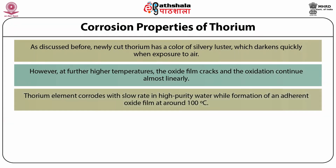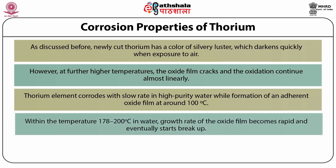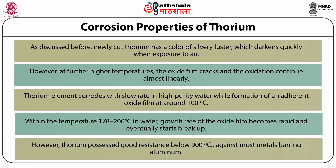Thorium corrodes at a slow rate in high purity water while forming an adherent oxide film at around 100 degrees Celsius. Within the temperature range of 178 to 200 degrees Celsius in water, the growth rate of the oxide film becomes rapid and eventually starts breaking up. The reaction becomes very rapid at around 315 degrees Celsius. However, thorium possesses good resistance below 900 degrees Celsius against most metals barring aluminium.